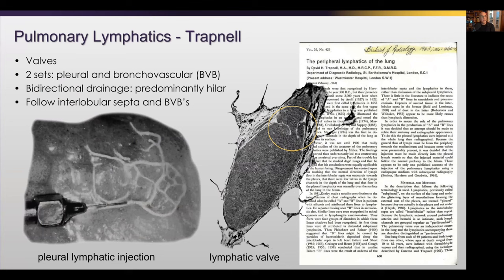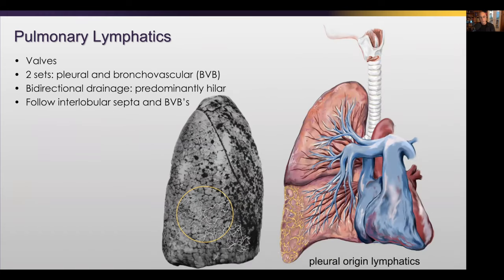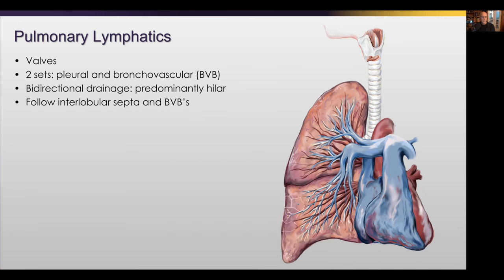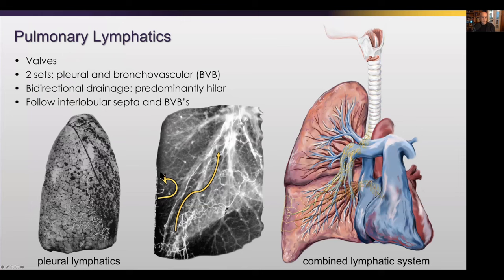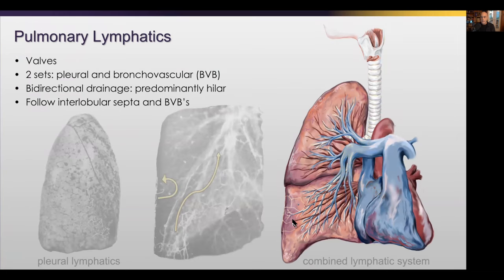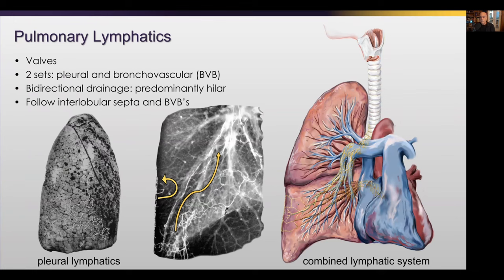Let's take a minute and talk about the lymphatics, originally discovered by Tapnell in the 50s. These are his original injections on the left — this is the pleural surface of the lung. He was the first to show that there were one-way valves within the lymphatics, and helped explain the direction of lymphatic flow. There are two sets: one starting in the pleura, a second along the bronchovascular bundles. The lymphatics find their way into the lung through the interlobular septum, attaching to a pulmonary vein and working into the mediastinum.